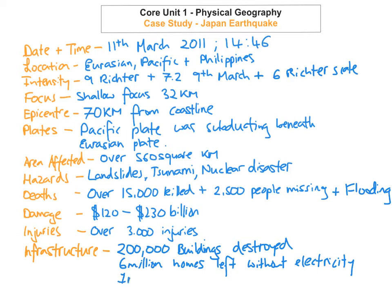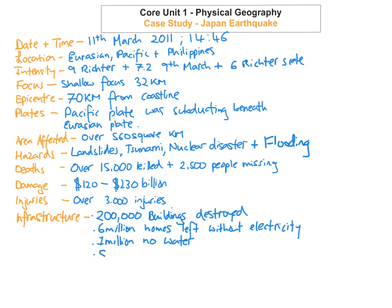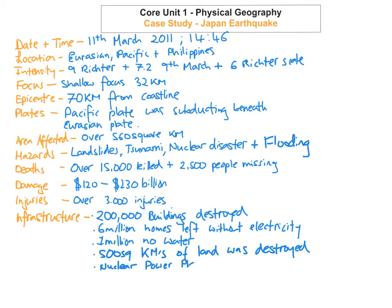Over 1 million people had no running water. 500 square kilometres of land was destroyed, which released lots of radiation into the Fukushima area and caused many future problems for the Japanese people.